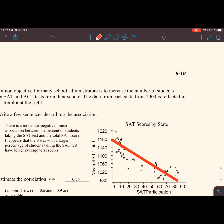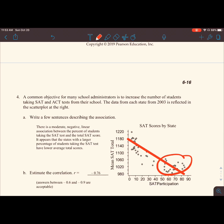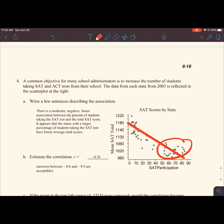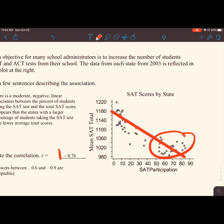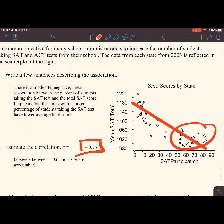It appears that states with larger percentages of students taking the SAT test will have a lower average test score. As we see as we tail off to the bottom, the higher the participation, the lower the mean score.